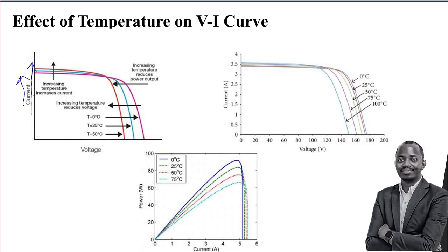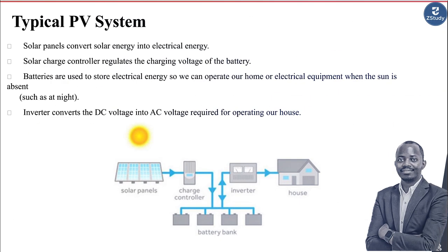As the current is increasing, the voltage is reducing. You can see this is the maximum current, i3, which is the highest current that you have, but if you follow it you realize that this is the voltage value that you get there.